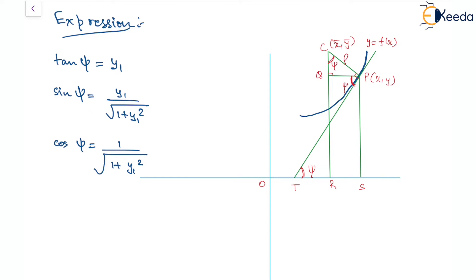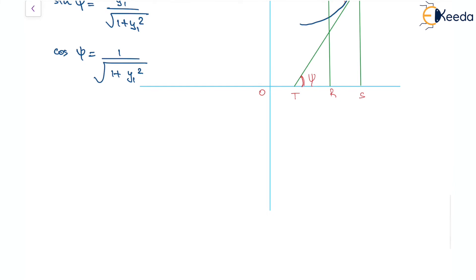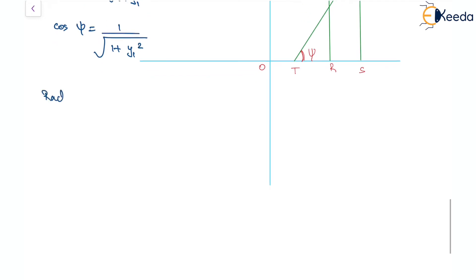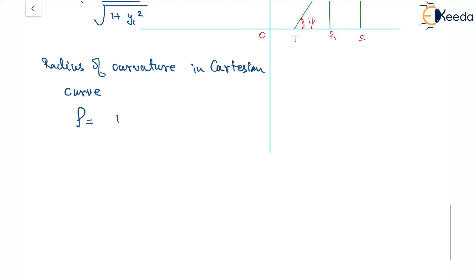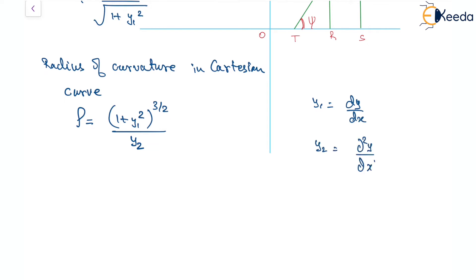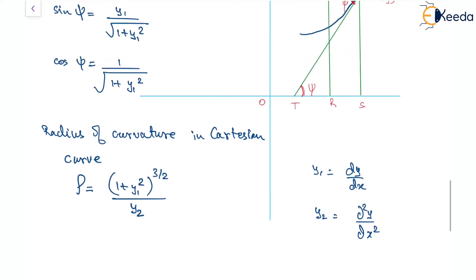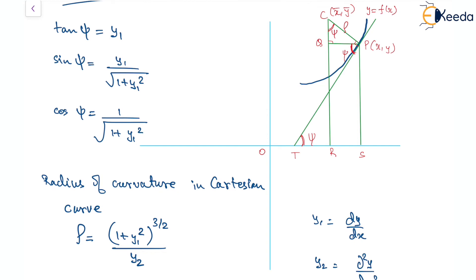We'll also consider the radius of curvature. For the Cartesian curve, the radius of curvature rho is given by (1 + y₁²)^(3/2) divided by y₂, where y₂ is the second derivative of y with respect to x. So y₁ = dy/dx and y₂ = d²y/dx². With the knowledge of tan ψ, sin ψ, cos ψ, and the radius, let us now talk about the center of curvature.